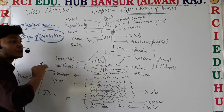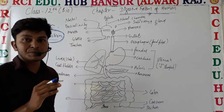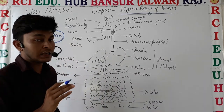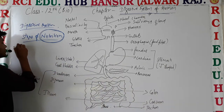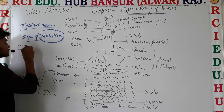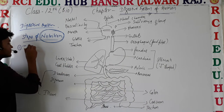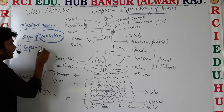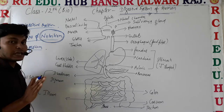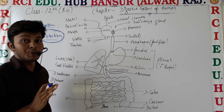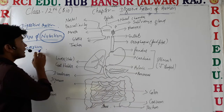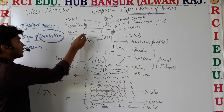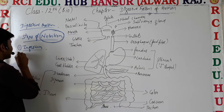Inside this chapter we are going to study the five steps of nutrition. The first one is ingestion — it means the intake of food into the body. We take food by the help of the mouth, and that is known as ingestion.